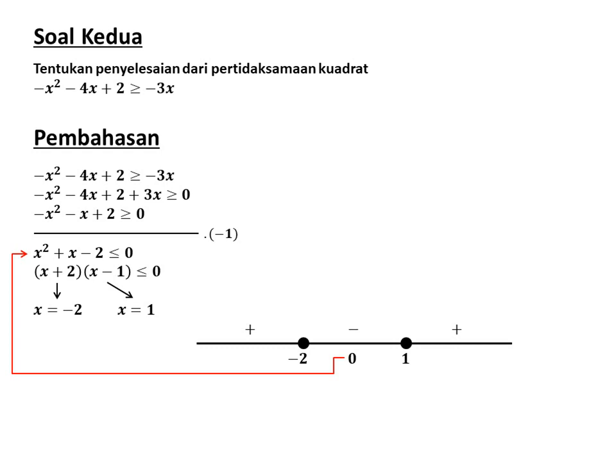Perhatikan bentuk yang ideal: x² + x - 2 ≤ 0. Karena yang diminta ≤ 0, ambil daerah yang negatif. Tarik dari -2 ke atas dan 1 ke atas, buat bentuk kotak. Maka himpunan penyelesaiannya adalah -2 ≤ x ≤ 1, artinya x di antara -2 sampai 1 dengan -2 dan 1 ikut masuk menjadi jawaban.